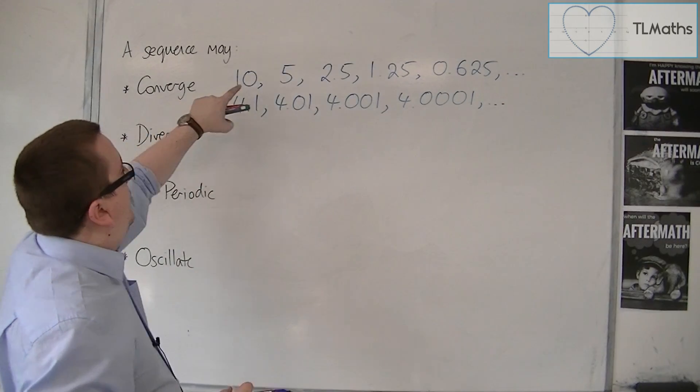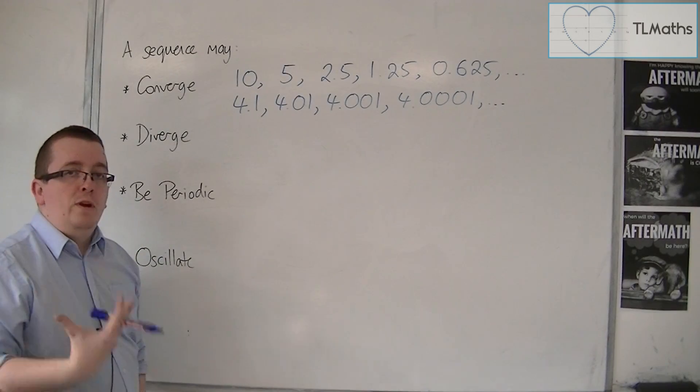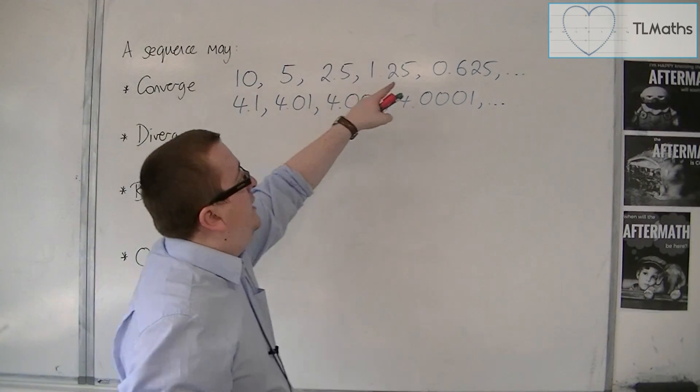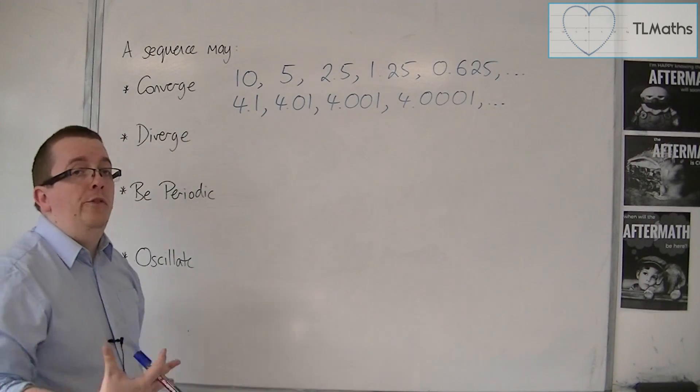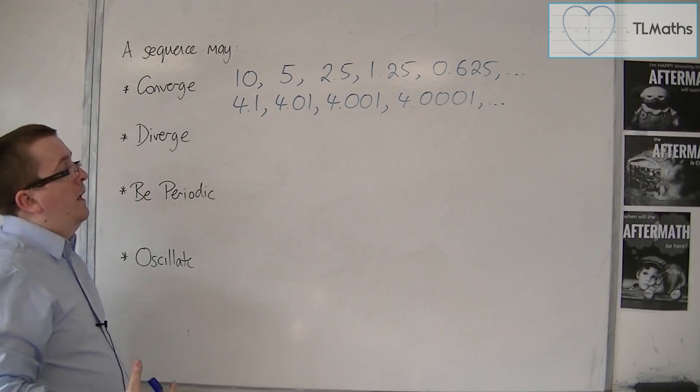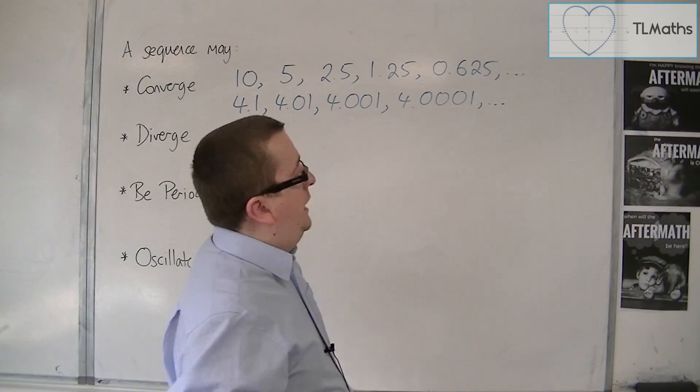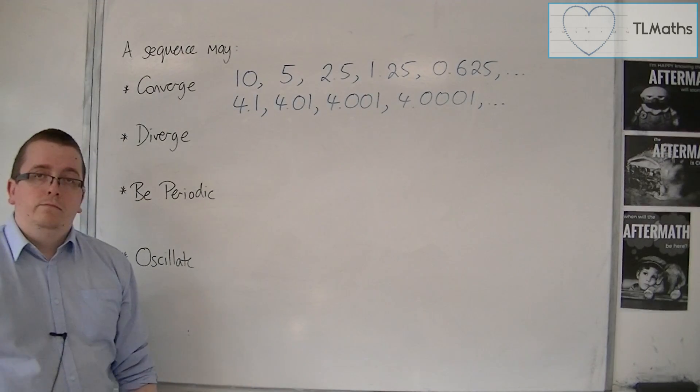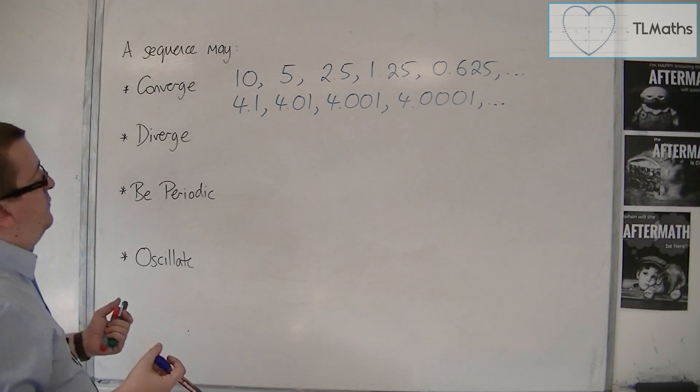As I halve these numbers over and over again, this number is getting smaller and smaller, and is getting closer and closer to 0. For this sequence, you can see that this is getting closer and closer to 4. Both of these sequences would be said to be converging.